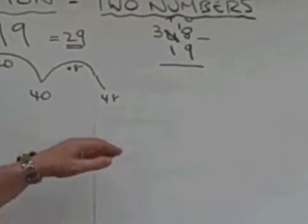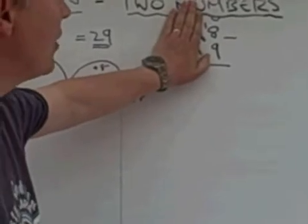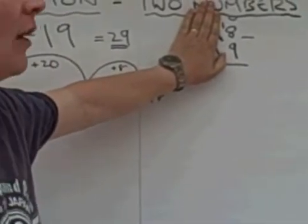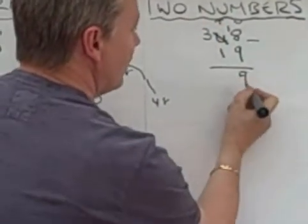So now I have one question, which is 18 take away 9, which is 9.